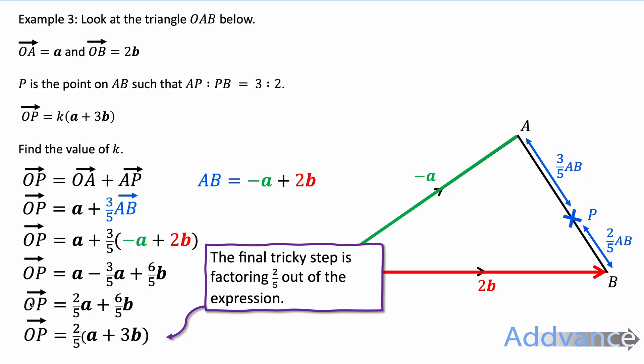And now, this is the tricky part, we're going to factorise 2 fifths out of that expression. Because both these coefficients, this 2 fifths and 6 fifths, can be divided by 2 fifths, we can take 2 fifths out of that expression. And that's a tricky step, because we have to factor out 2 fifths, and that's how we get it in the form something times a plus 3b. And so the something on the outside is 2 fifths, and therefore k is equal to 2 fifths. And that's the final answer.